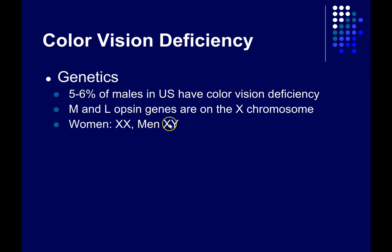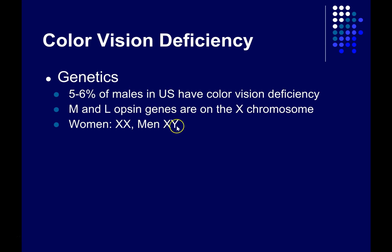Men, on the other hand, if they have a mutation on the X chromosome that prevents them from making a properly functioning medium or long wavelength photopigment, then they're out of luck. They don't have a backup — they have this Y chromosome, which does not contain these opsin genes. So as a result, they're much more likely to have a color vision deficiency.